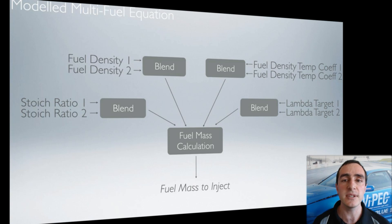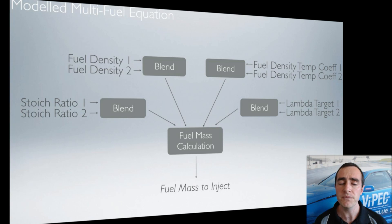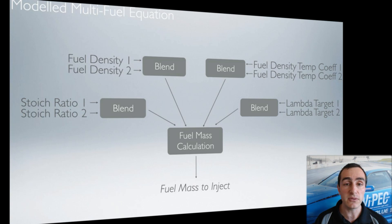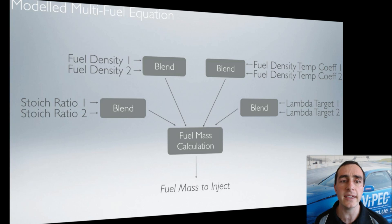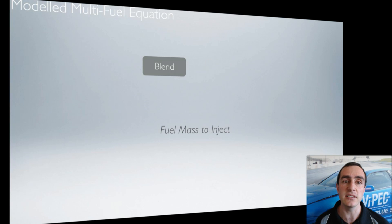There are also two lambda target tables — one for the primary fuel and one for the secondary fuel. If you want, you can run both tables at exactly the same values, but if you want to run a slightly different target on your secondary fuel, that's also possible. The ECU blends those two target tables according to the current blend of fuel. All of this comes together to give the fuel mass to inject.